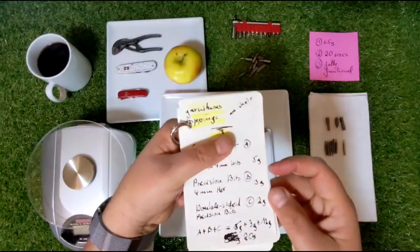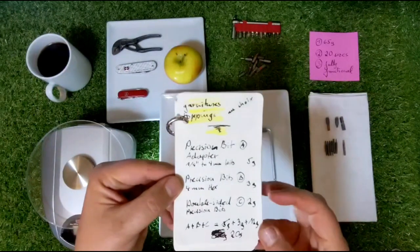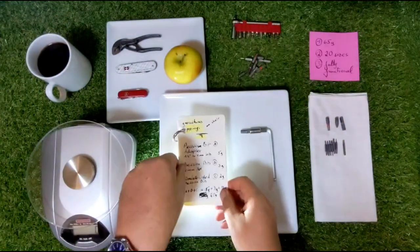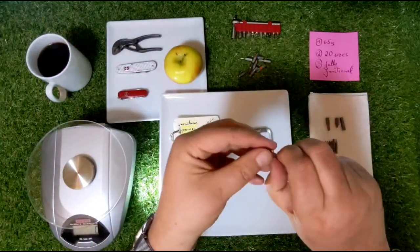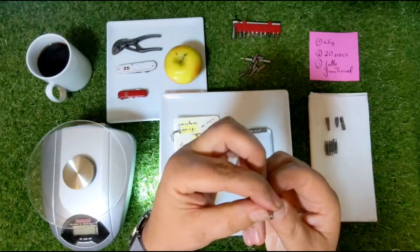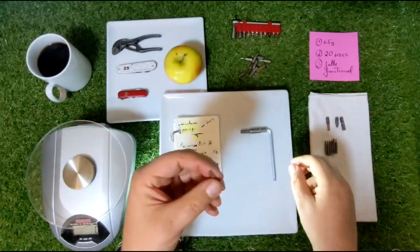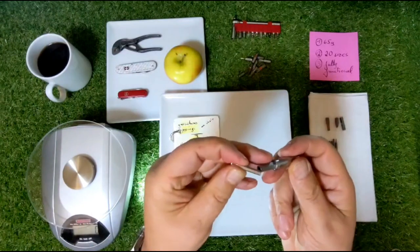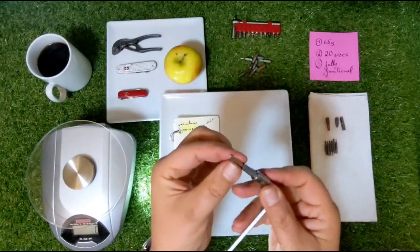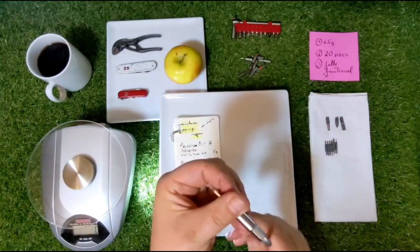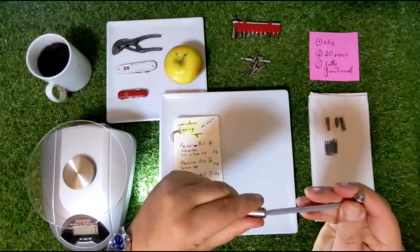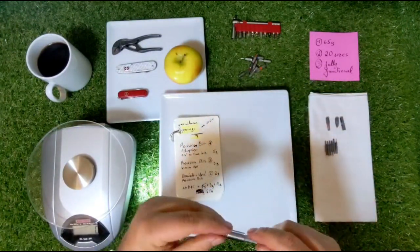Now we get into the precision bits—the 4mm hex and the double-sided ones. The difference here is simply weight, mostly. This is a typical one. I chose the Torx 20, T20. You just insert it and the shaft is relatively long. This works really very nicely if you want to use it like a normal screwdriver. For example, this one is perfect.